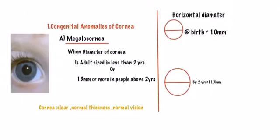The first congenital anomaly we'll discuss is megalocornea. Before that, let me remind you about the normal diameter of the cornea. The horizontal diameter of the cornea at birth is 10 millimeters, while by the age of two years it will be 11.7 millimeters.